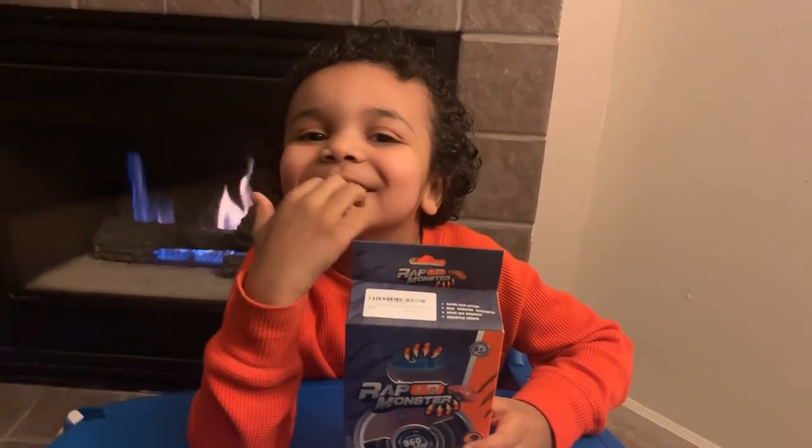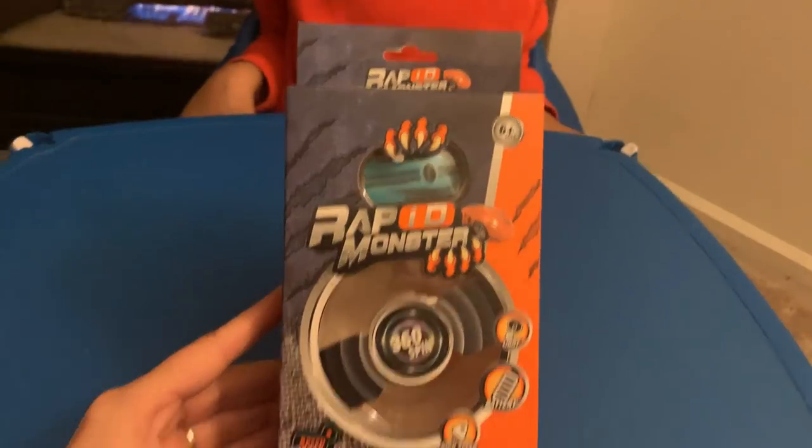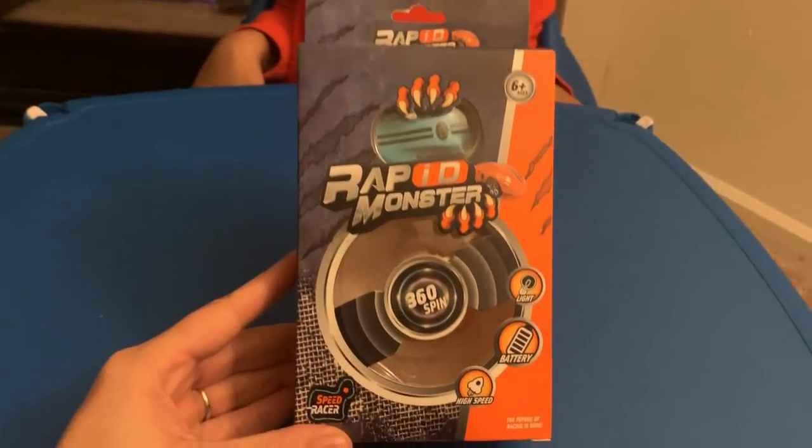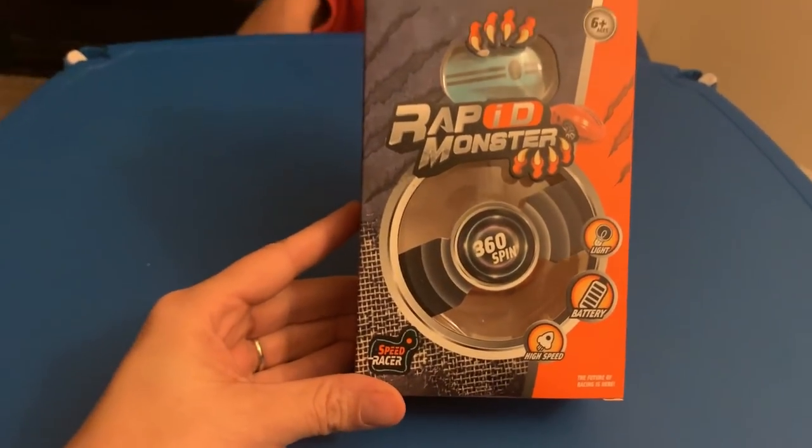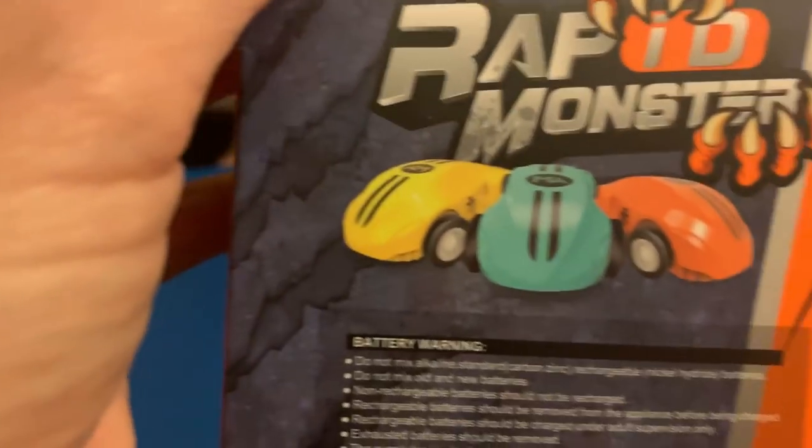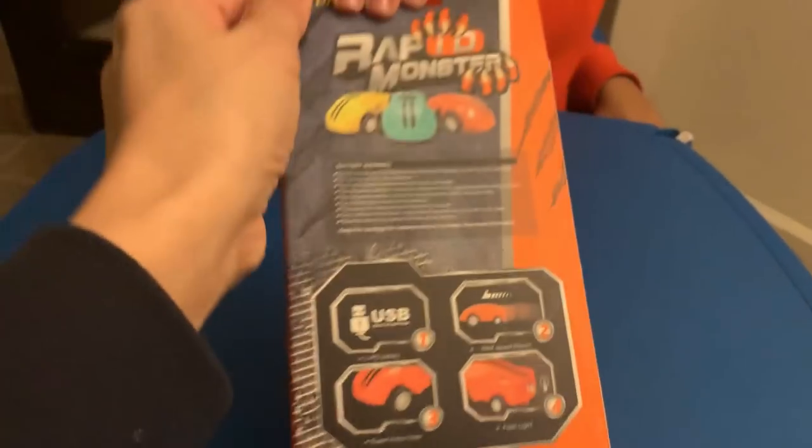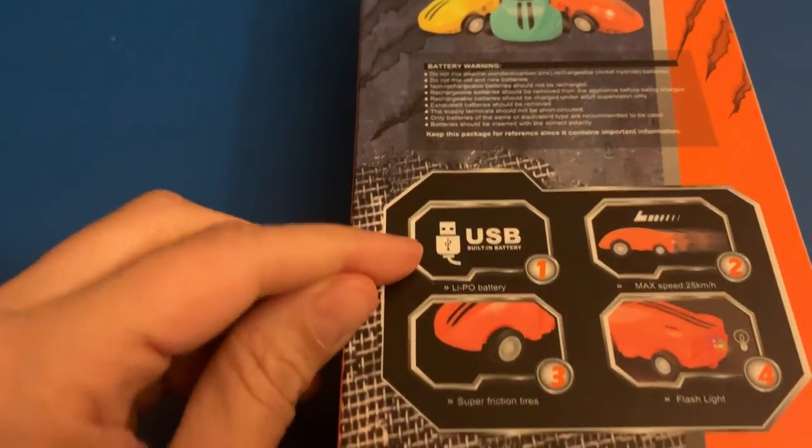Hi, what are we doing today? So we got these little 360 spin speed racer cars from Amazon rapid monster and it comes with a built-in battery.